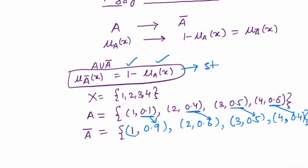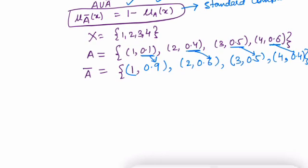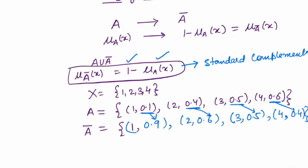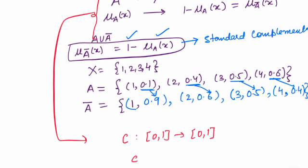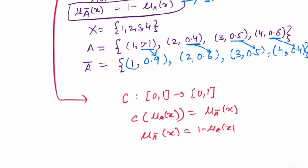In this lecture we'll give some axioms under which complements are defined. Formally, the complement of a fuzzy set A is a function C: [0,1] → [0,1], since membership grades lie in [0,1]. It maps the membership grade μ_A to μ_{A complement}, where A complement is defined as 1 minus μ_A(x).